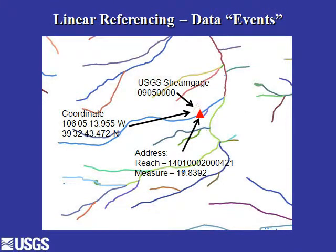This is a case where we have a USGS stream gauge as an event on this same reach code we were looking at earlier. The stream gauge has the coordinates of the latitude and longitude, and it also has an address that's on our reach code. In this case the measure is 19.8392, which is 20% upstream from the downstream end.